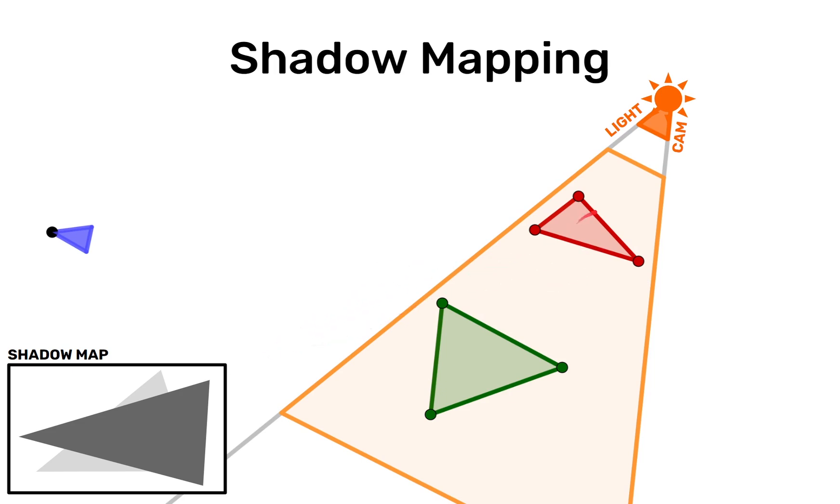So here the red triangle is closer to the camera so it will have a smaller depth and the green triangle is further away it will have a larger depth value. And this depth map captured from the light source is the shadow map.